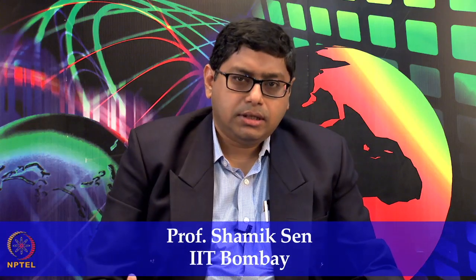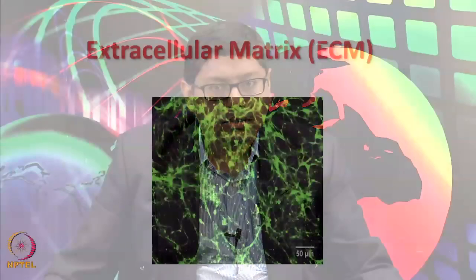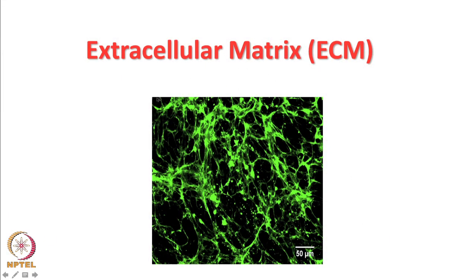Hello and welcome to our fourth NPTEL lecture on Introduction to Mechanobiology. In the last lecture I started discussing about the extracellular matrix — the firm ground required for stabilizing cell shape. The matrix is secreted by fibroblasts and contains multiple different ECM proteins with multiple features.